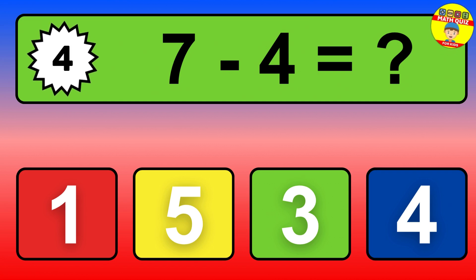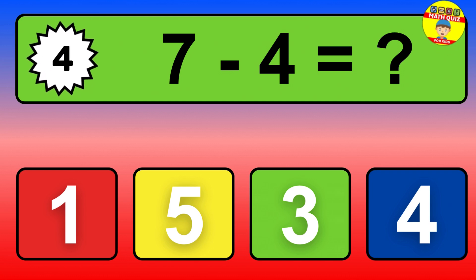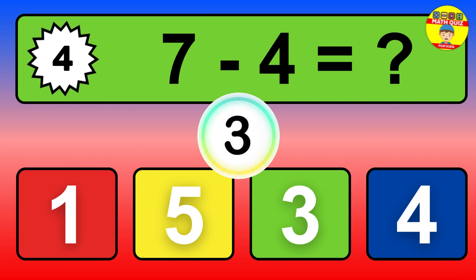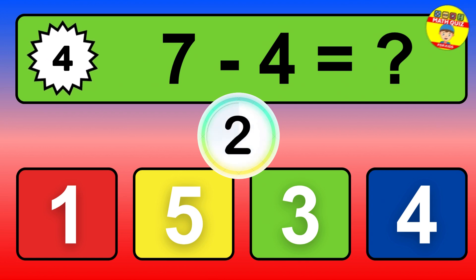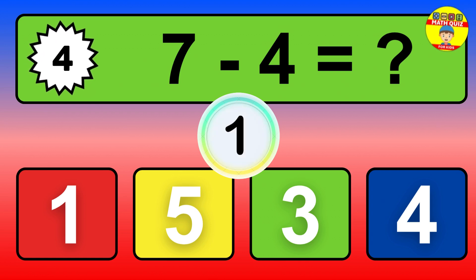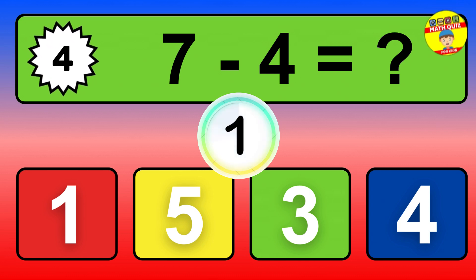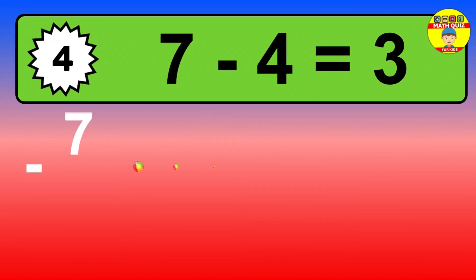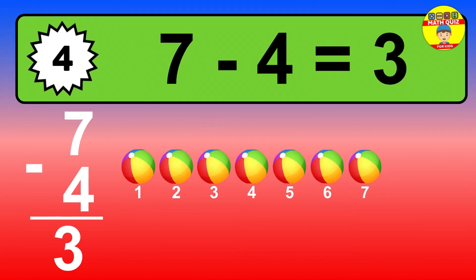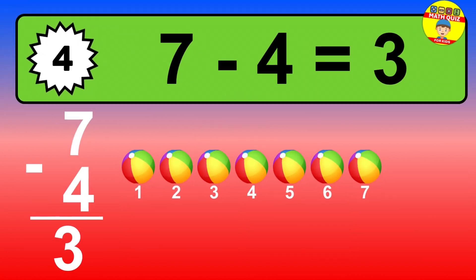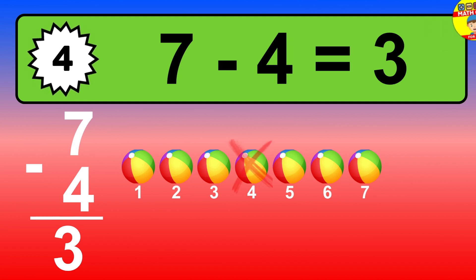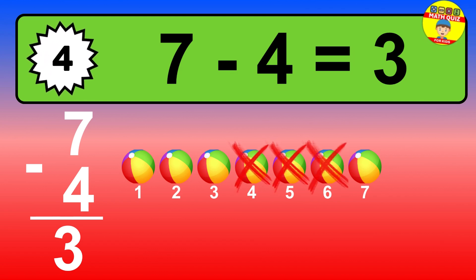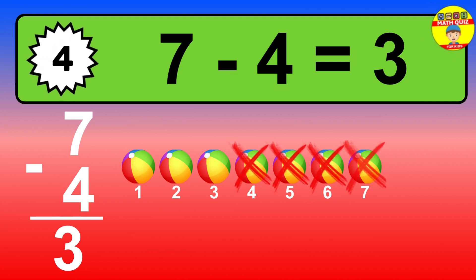Question 4. 7 minus 4 equals what? So the answer is 7 minus 4 is 3. Let's count it. 1, 2, 3.